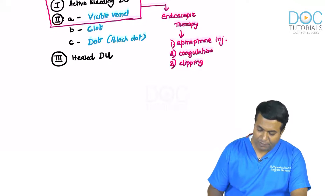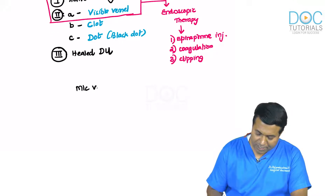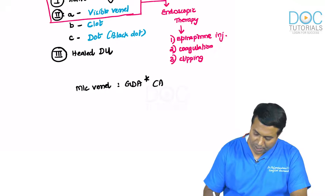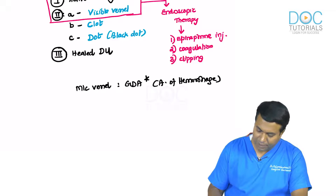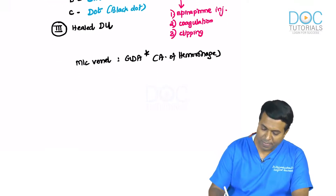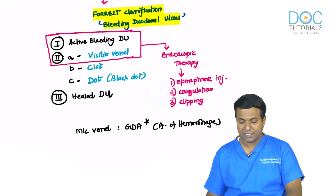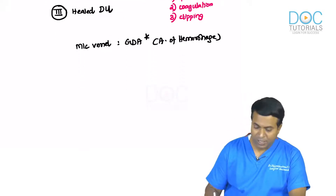The most common vessel bleeding in duodenal ulcer is the gastroduodenal artery, also known as the artery of hemorrhage — it bleeds profusely.